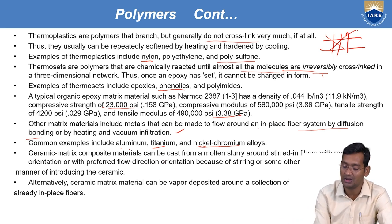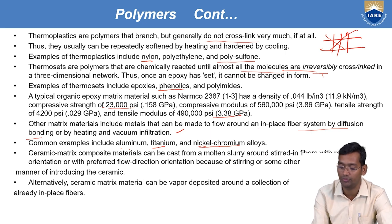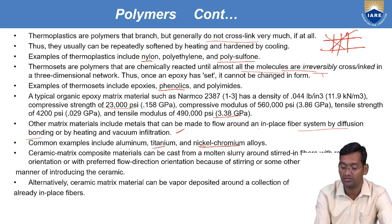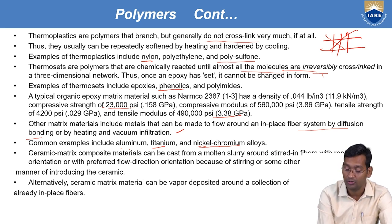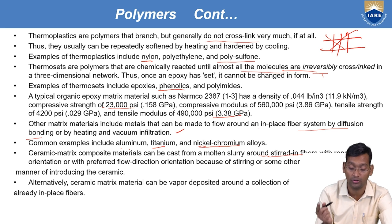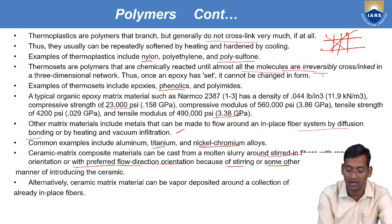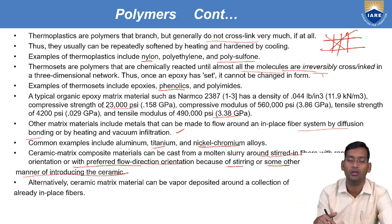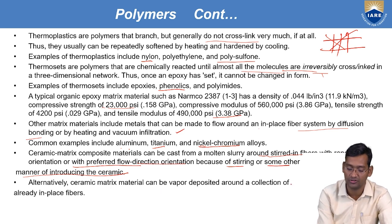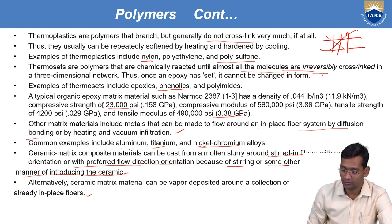Ceramic matrix composite materials can be cast from a molten slurry around fibers with random orientation or with preferred flow direction orientation — because of steering or some other manner of introduction. Ceramic matrix material can also be vapor deposited around a collection of already-in-place fibers.